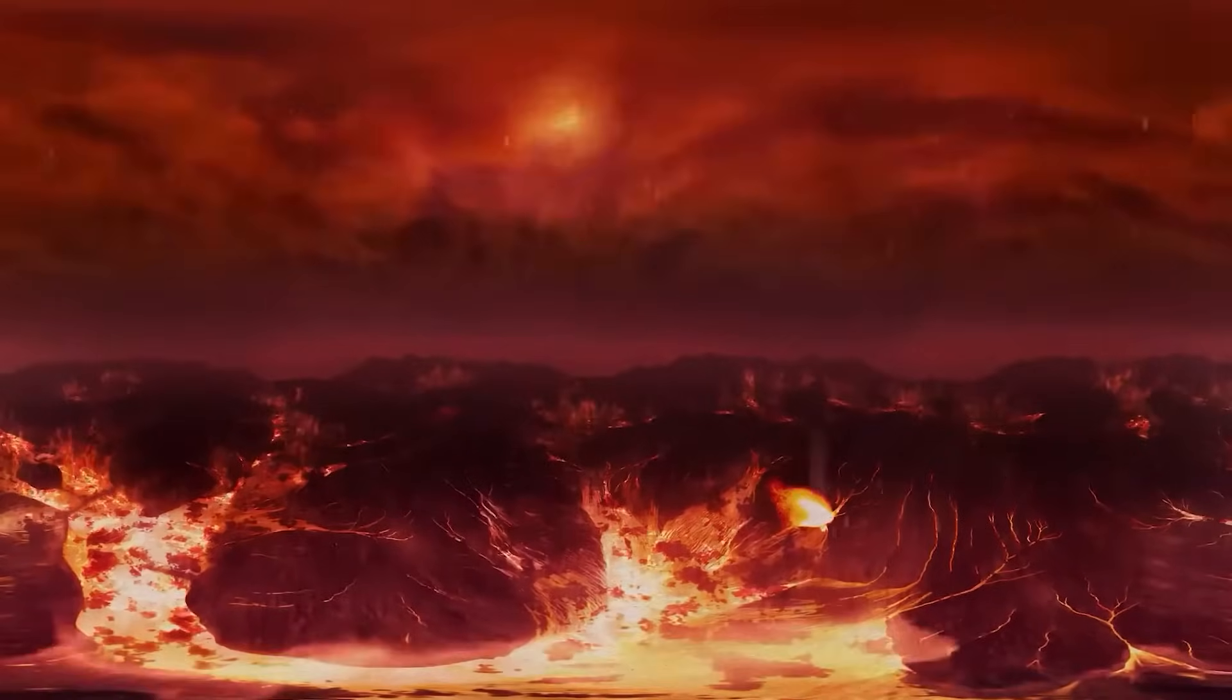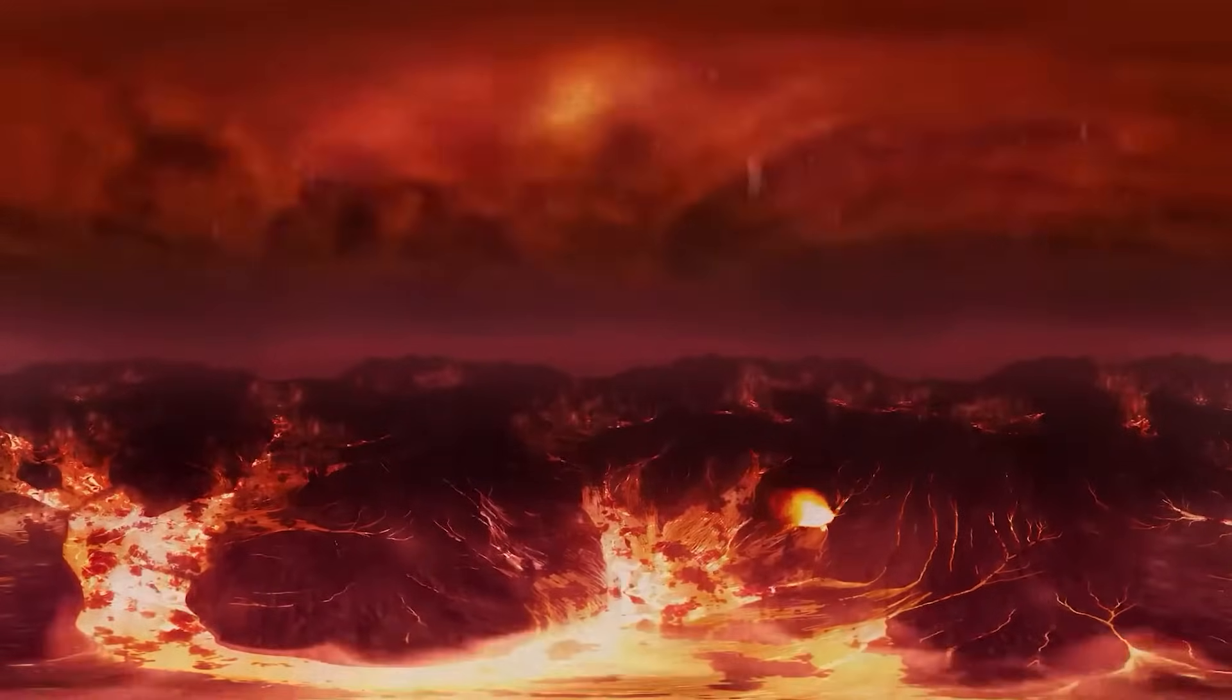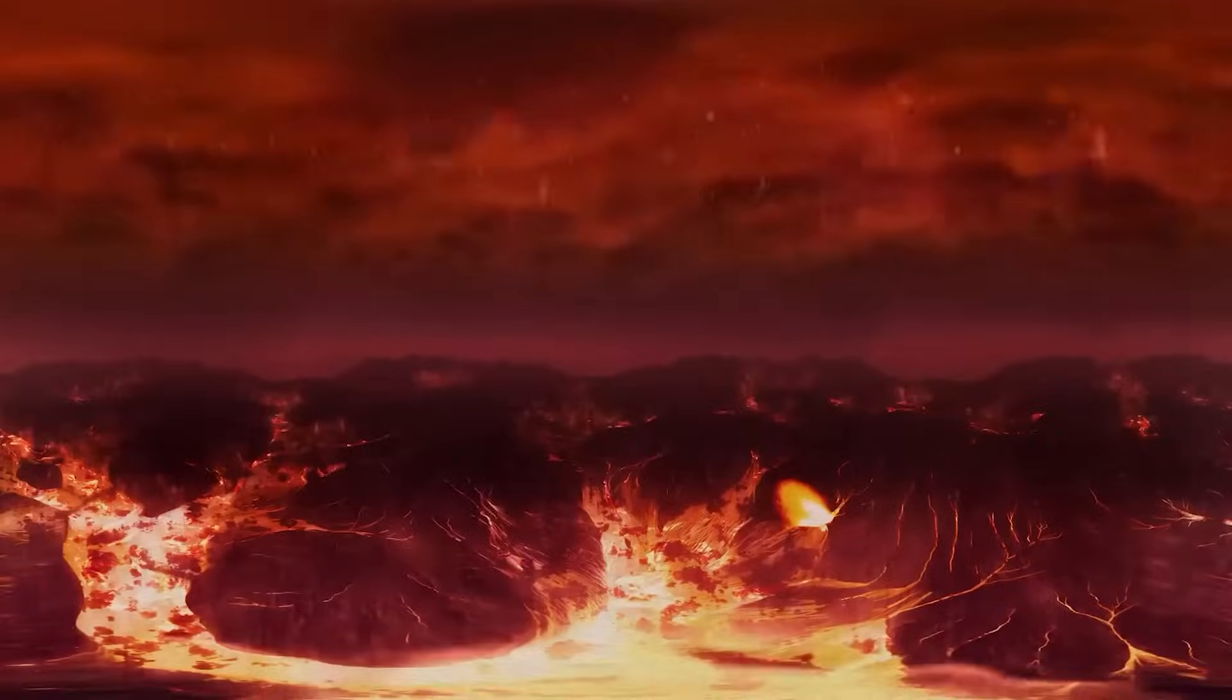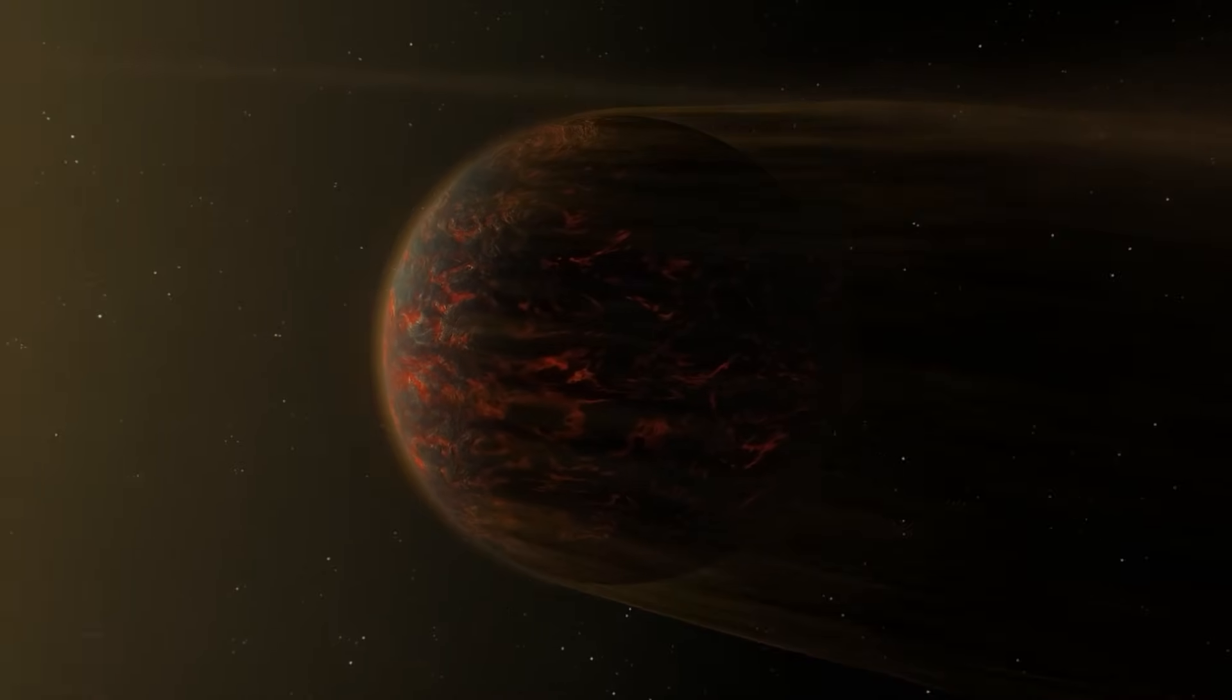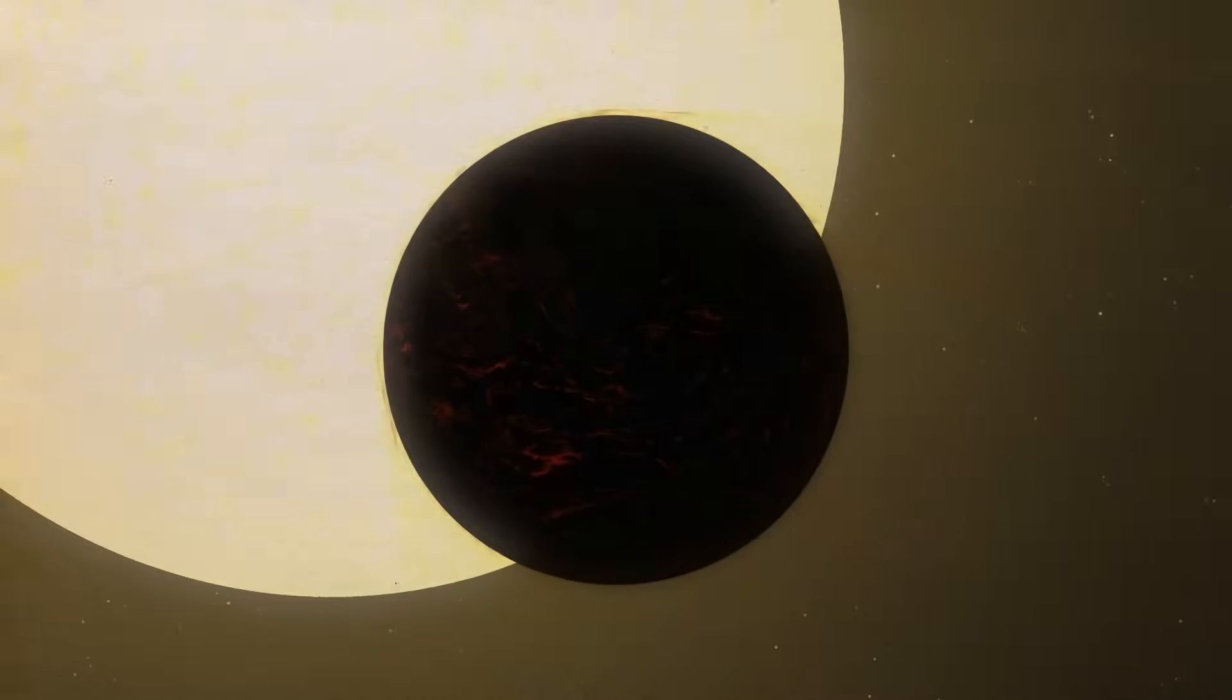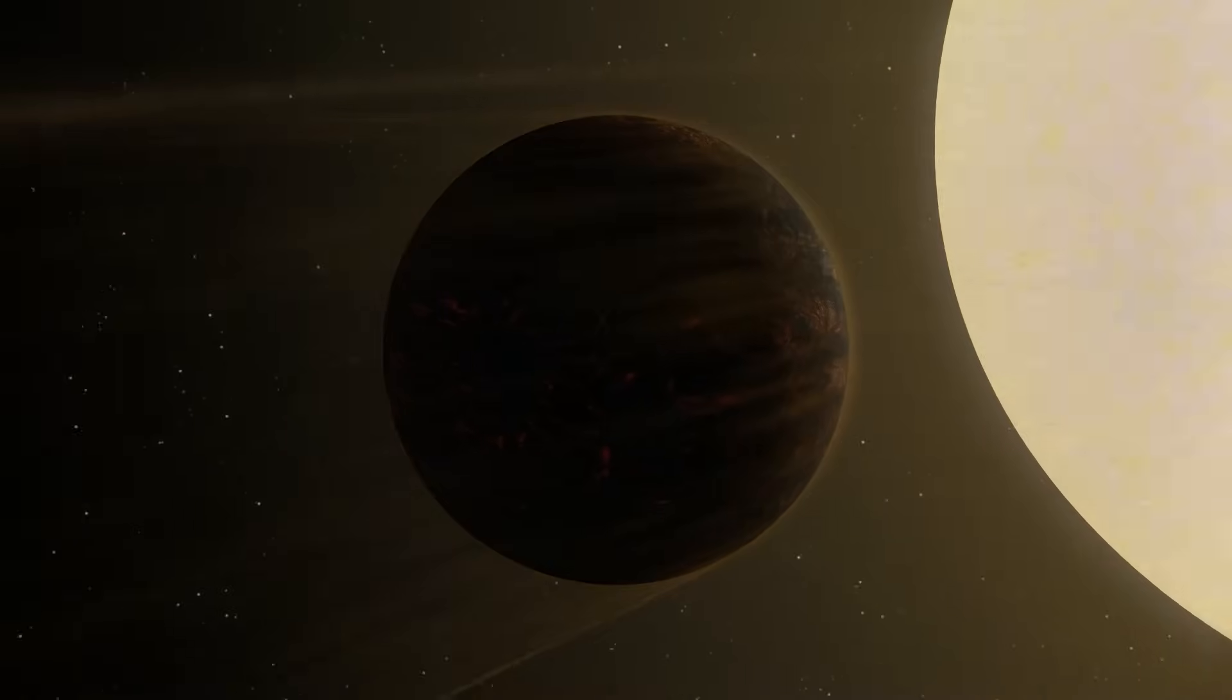Approximately 1,100 miles below a planet's surface is its outer core, where superheated, churning liquid iron generates magnetic fields similar to Earth's. Convection currents are created by the heat escaping from the inner core, which then causes the iron to move and generate strong electrical currents. As the globe spins on its axis, a magnetic field is created.